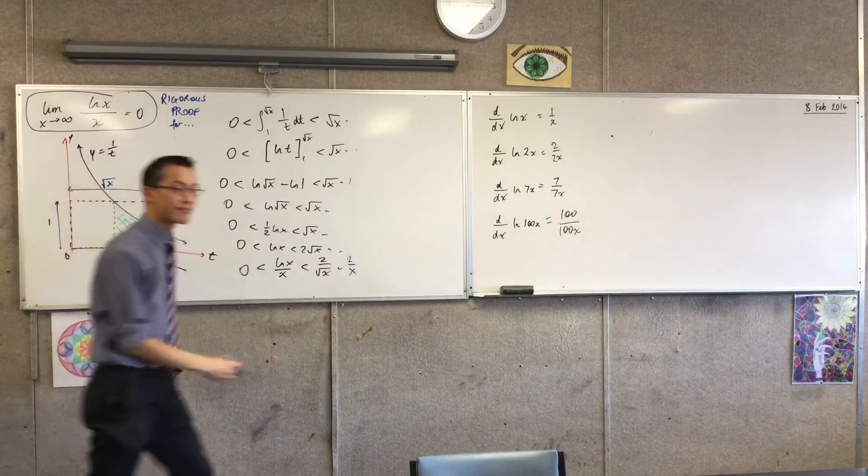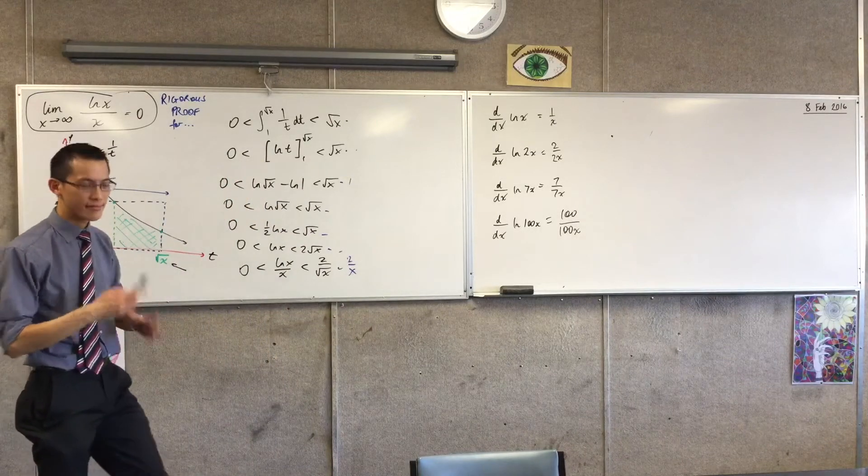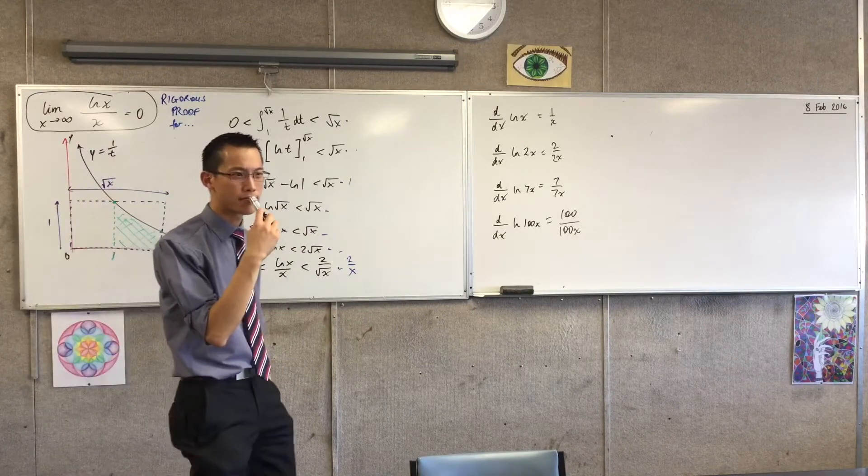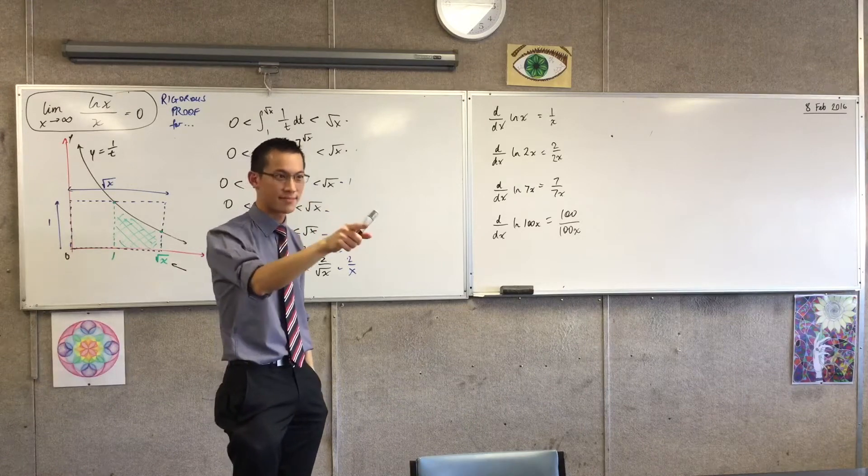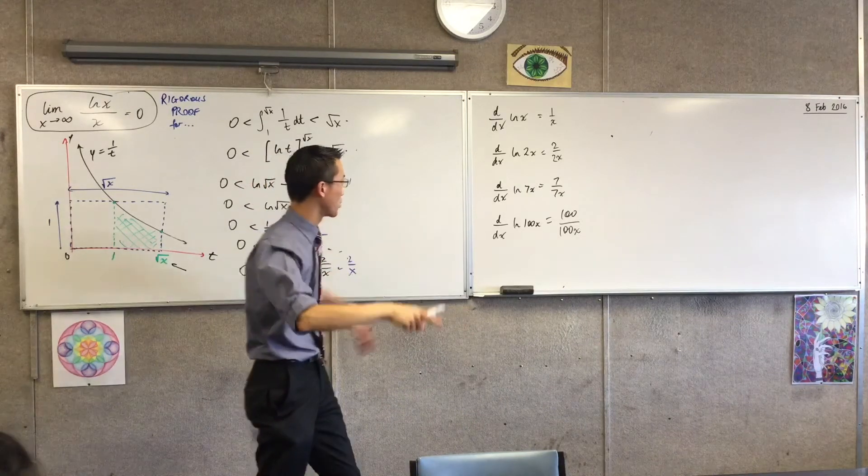Because if we look at the exponential function, when we derive the exponential function, what we get is the exponential function, the gradient is, or in a way it's proportional. Yes, yes, yes. Okay, good, good, good.